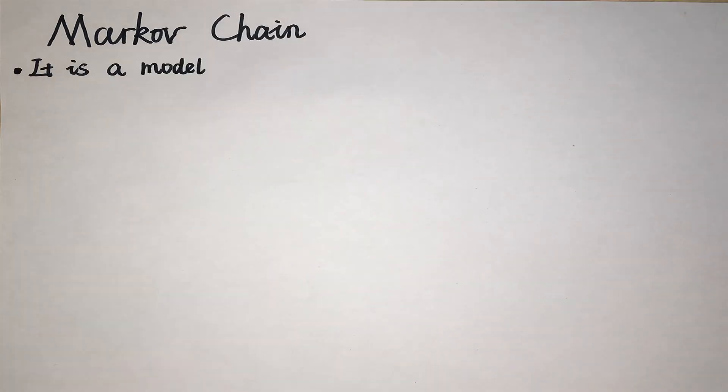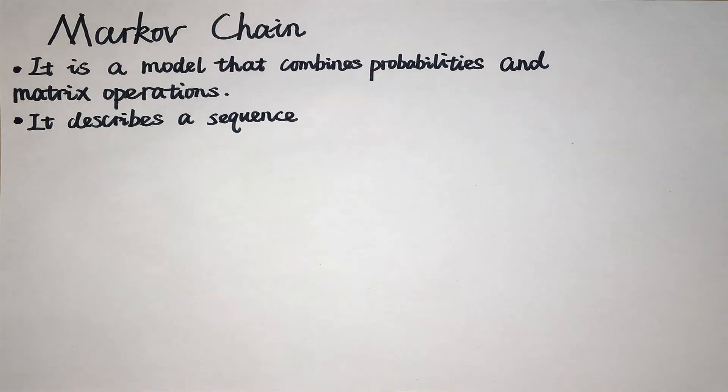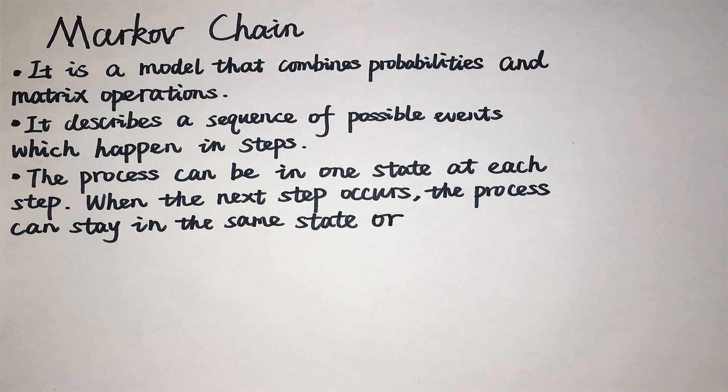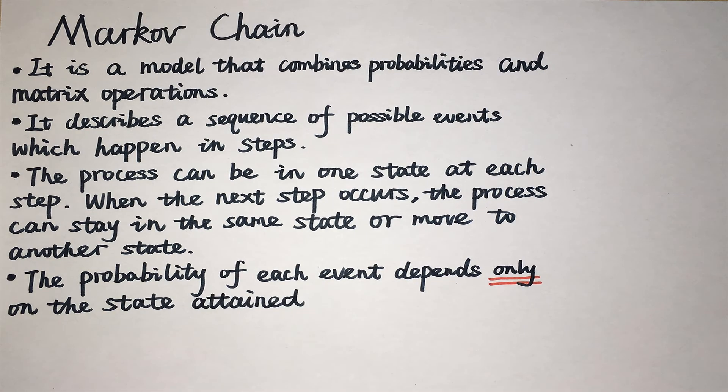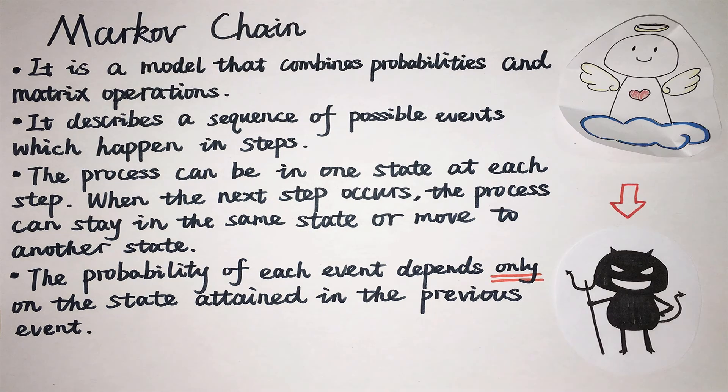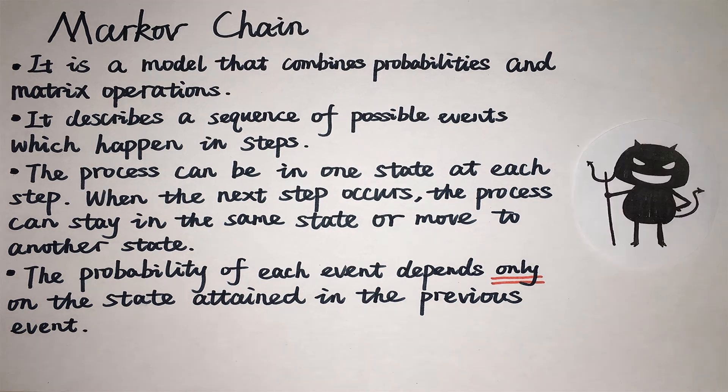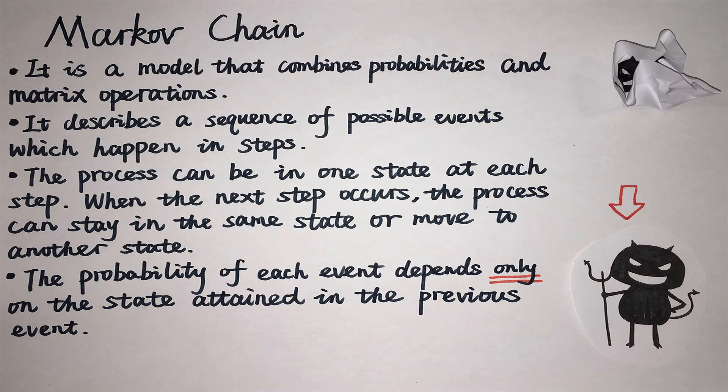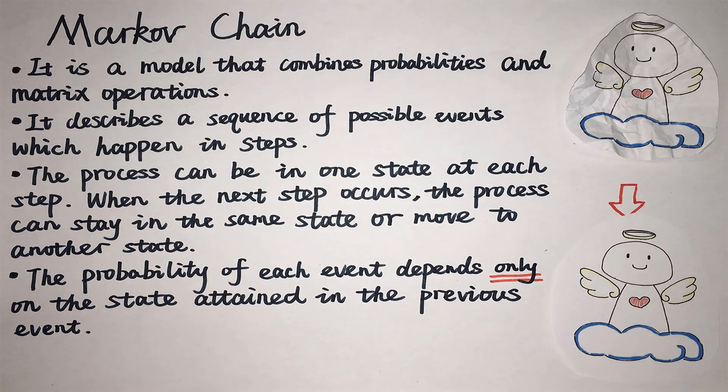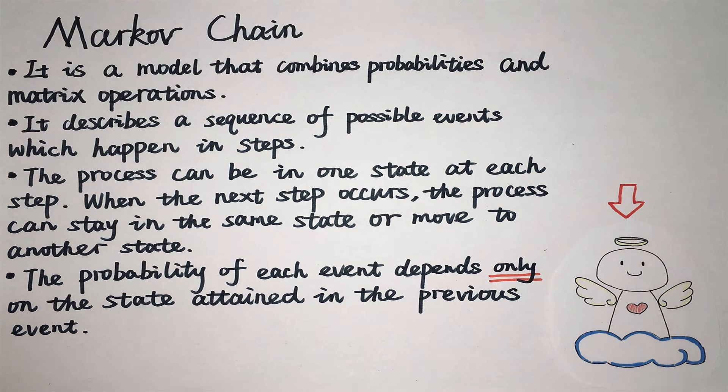Then, what is a Markov chain? We know that a stochastic process is a statistical model we use to make predictions. Suppose a stochastic process consists of a sequence of possible events that happens in discrete steps, such as time, sequence, or trials, that the model can only be in one state at each step, and it also satisfies Markov property. Then, this is a Markov chain.